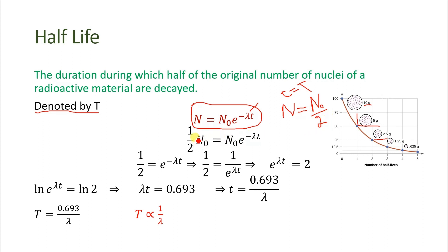After substituting, we have (1/2)N₀ equal to N₀ · e^(−λT). The N₀ terms cancel out, leaving 1/2 equal to e^(−λT). We can rewrite this as 1/2 equal to 1 over e^(λT), where the negative sign is changed to a positive sign in the denominator.